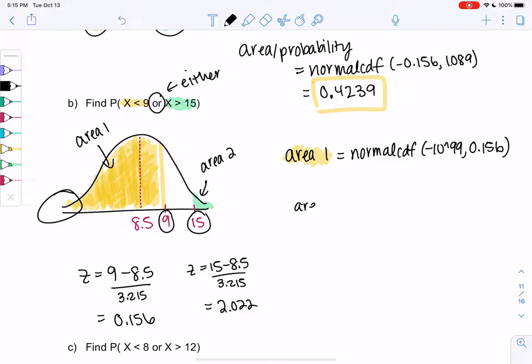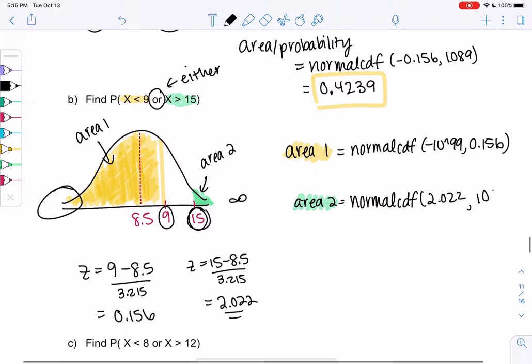And then area 2, that's the one on the right over here. We'll use normal CDF again. 2.022 is my lower end point, because using z-scores up to infinity. So up to 10 to the 99.